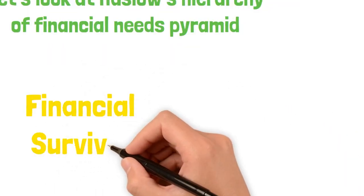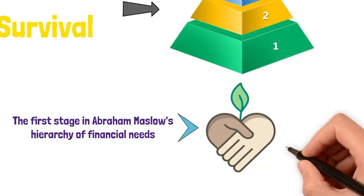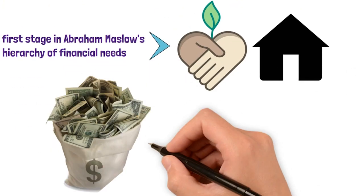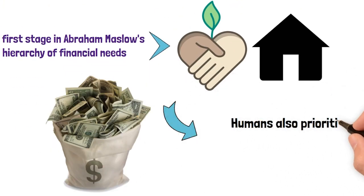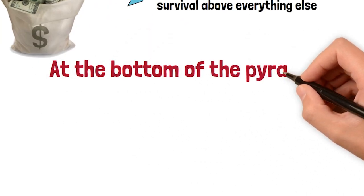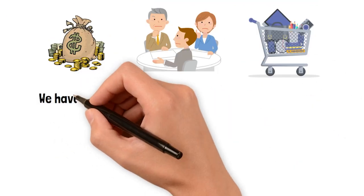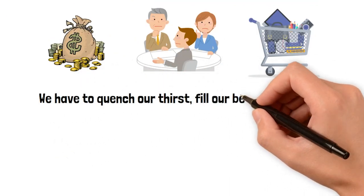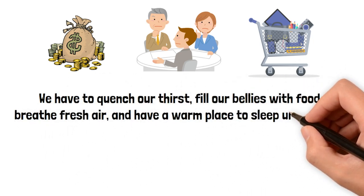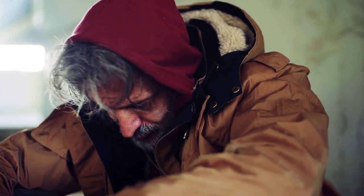Financial survival. The first stage in Abraham Maslow's hierarchy of financial needs is all about our basic needs, like staying alive and surviving. Just like any other living beings, humans also prioritize survival above everything else. At the bottom of the pyramid are our physiological needs, which means things like having enough money to cover essential expenses. We have to quench our thirst, fill our bellies with food, breathe fresh air, and have a warm place to sleep under a roof. Sadly, not everyone has it easy. Some people struggle to meet these basic needs.